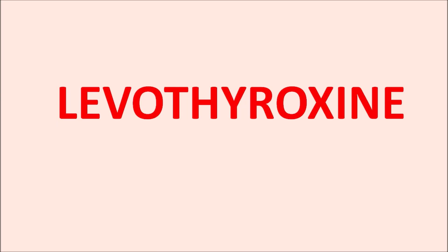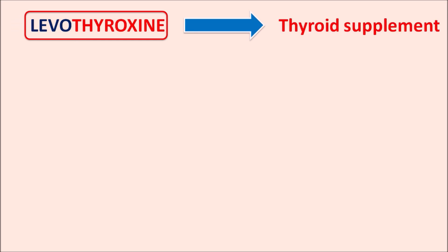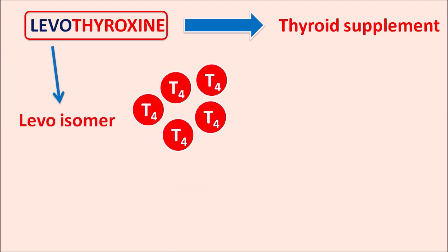Today we are going to discuss levothyroxine. This drug is a thyroid hormone supplement. The prefix 'levo' indicates this drug is an optically active compound, and levothyroxine is the levo isomer of thyroxine, expressed as T4.